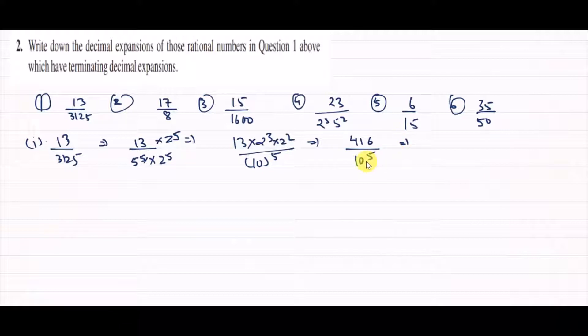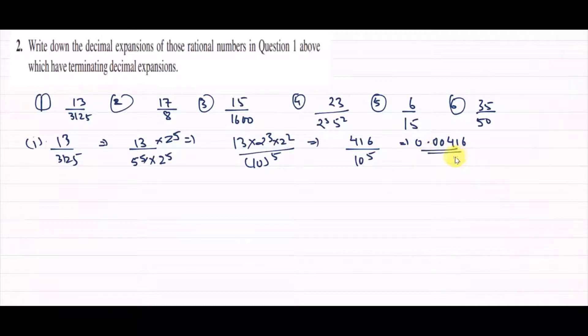Now, how many zeros total? 5 zeros. We have 416 and we place the decimal point 5 places from the right. Counting 1, 2, 3, 4, 5 — so this becomes 0.00416. This is a very simple question.